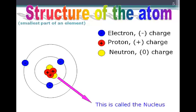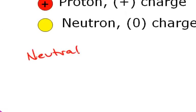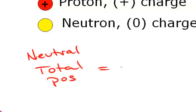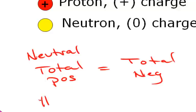The area in the center of the atom is called the nucleus. Something important to understand is when we talk about an atom being neutral — meaning the total number of positive charges equals the total number of negative charges — that means the number of protons is equal to the number of electrons.